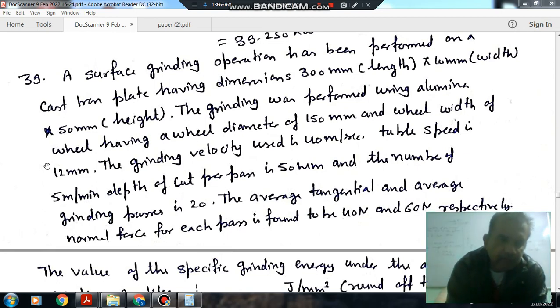Hello, welcome again. We are solving GATE 2021 Mechanical Engineering Paper 2. Question number 13 is: A surface grinding operation has been performed on a cast iron plate having dimensions 300mm length and 100mm width and 50mm height.